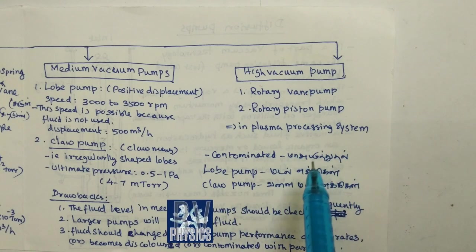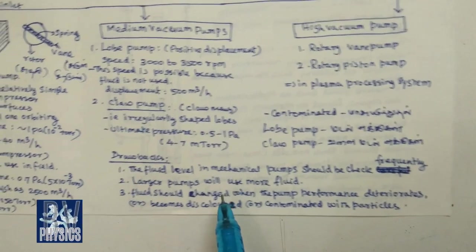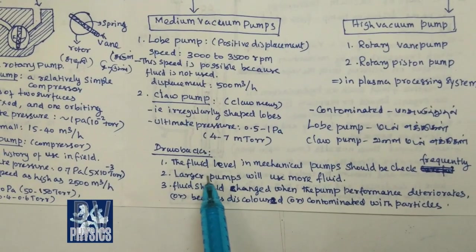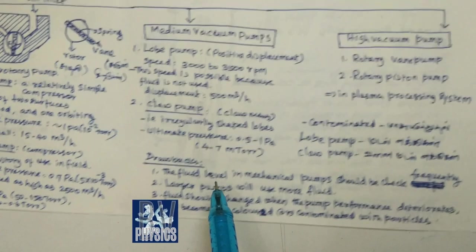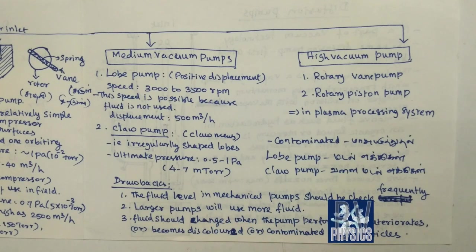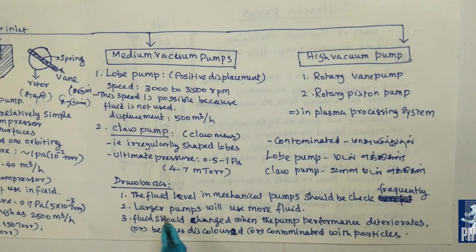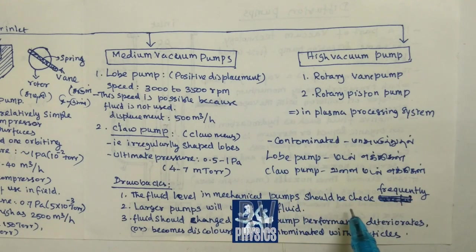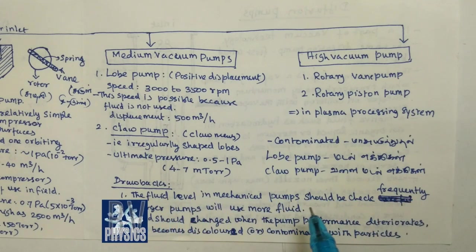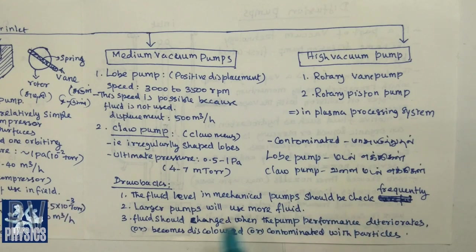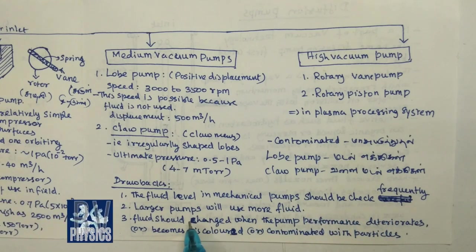If you use a mechanical pump, there are disadvantages. What are the drawbacks? Oil maintenance is a drawback. The fluid level in mechanical pumps should be checked frequently. If you use a liquid metal pump, you can use it to check the oil.